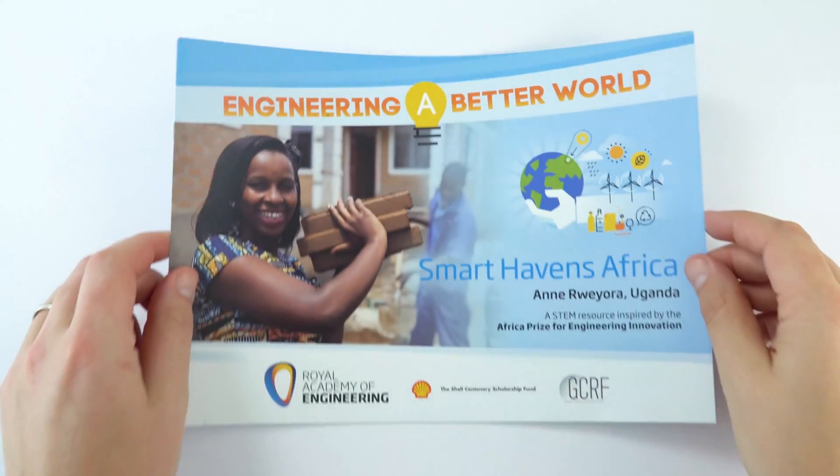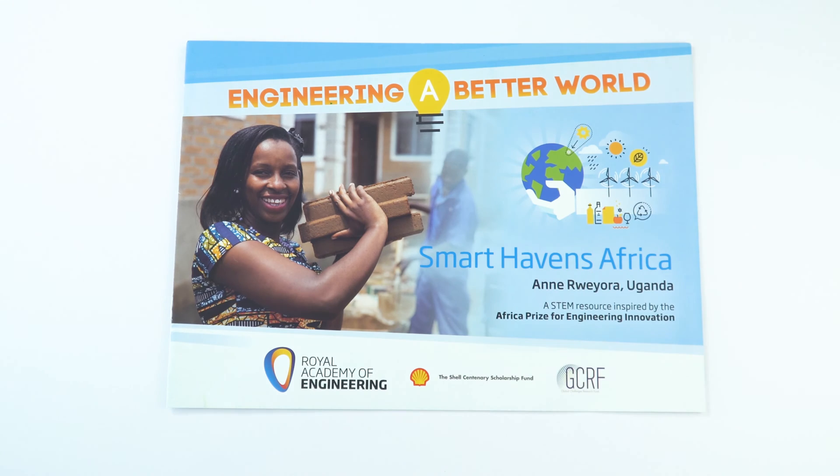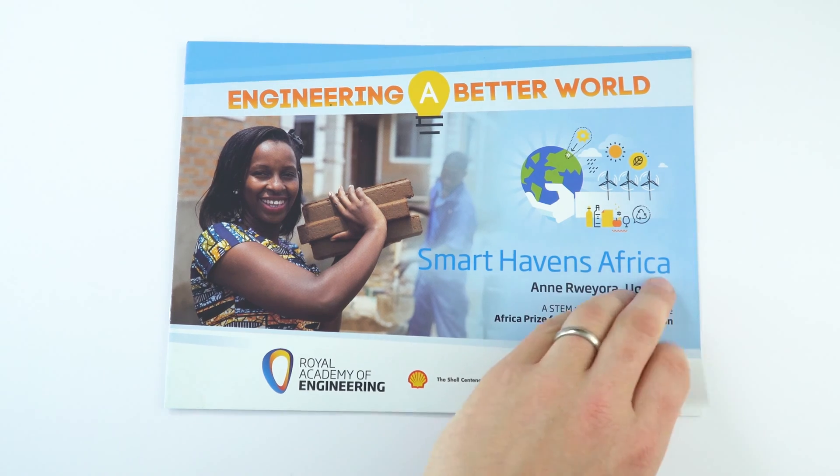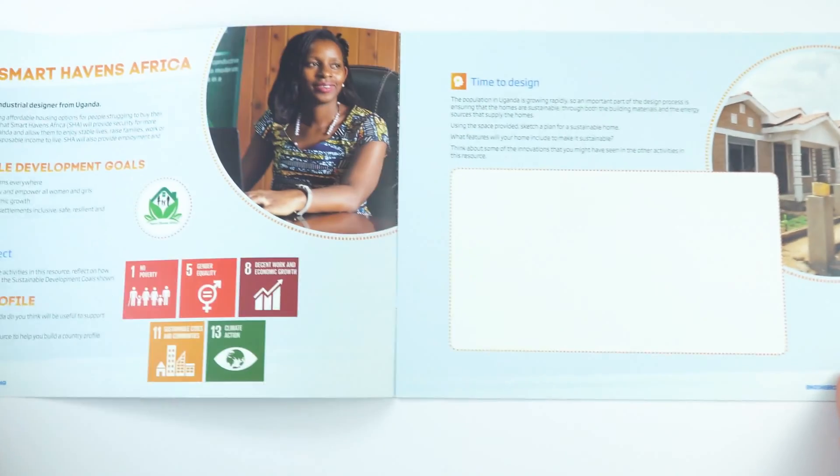The next resource booklet is called Smart Havens Africa, and this is an innovation by Anne Royora who's based in Uganda. Her and her team have developed affordable housing options for people struggling to buy their own homes.